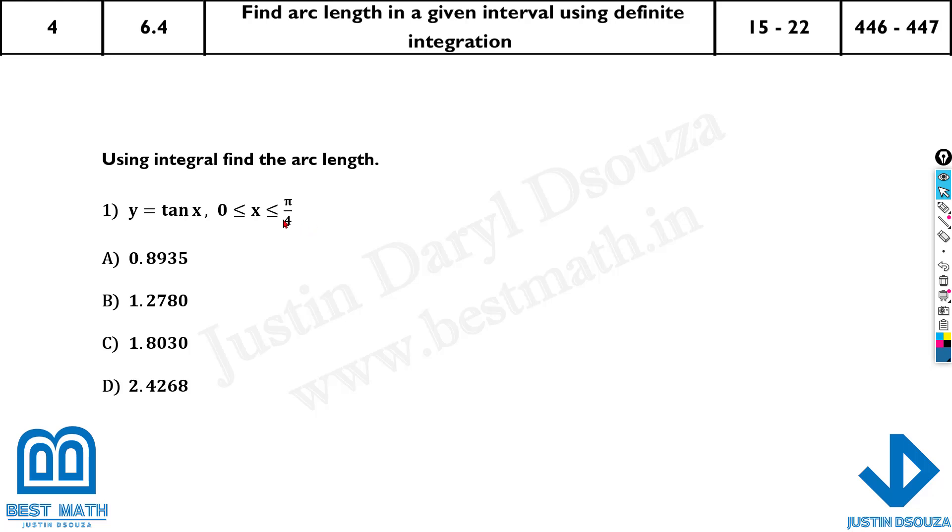Here the limits are usually always given. You just have to write the formula because you can't directly put them in the calculator. You need to find the derivative. So let's write the formula: a to b, that will be 0 to π by 4, square root 1 plus what's the derivative of the function given to us. It's secant squared x.